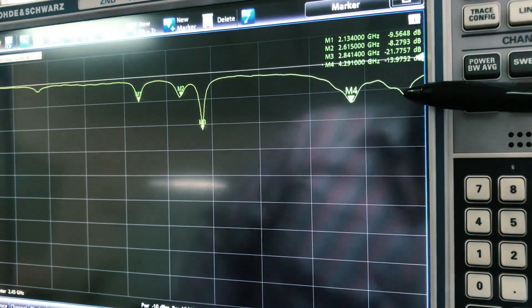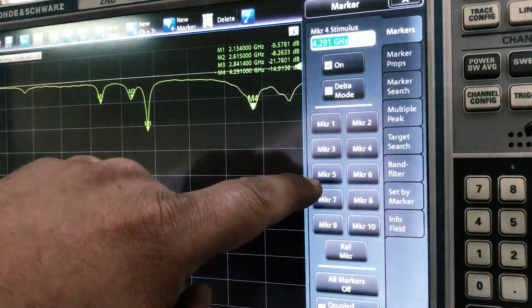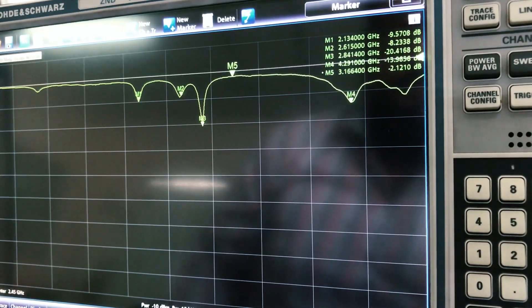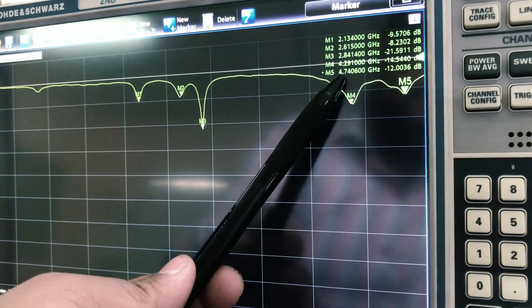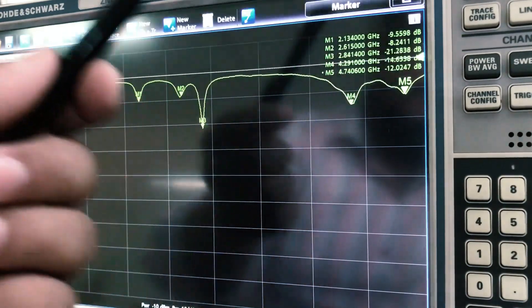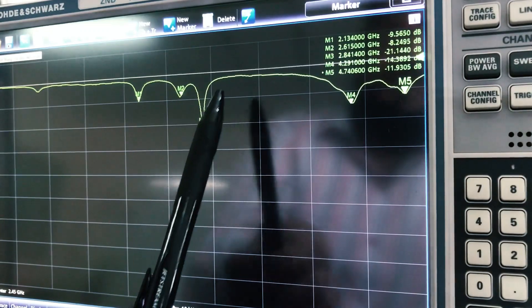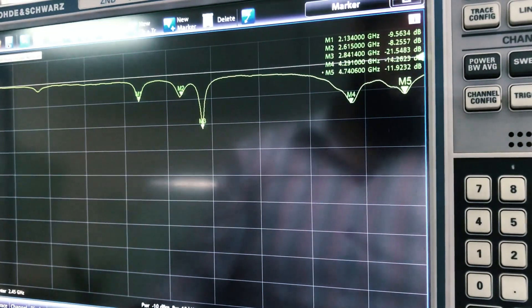So right here at the very end, this is also a peak. So I can also see, let's call in another marker, and let's call that marker number 5, and let's move this marker 5 over here. Marker 5 right now, it reads at about 4.74 GHz and negative 12 dB—that's the return loss. So I would say this antenna is radiating at three different points with good return loss, which means perfect impedance match is at M3, which is 2.8, then M4, which is 4.29, and M5, which is 4.7. So at these three frequencies, this antenna will perform good.